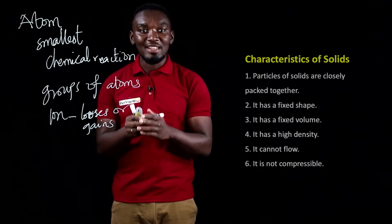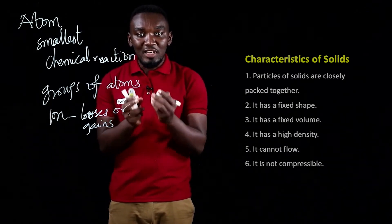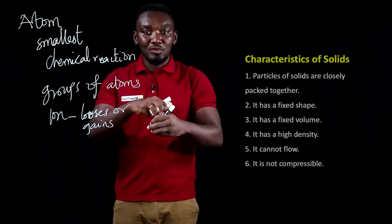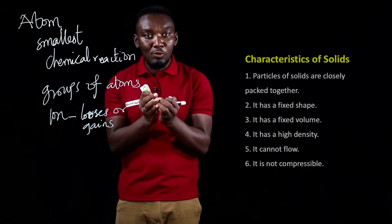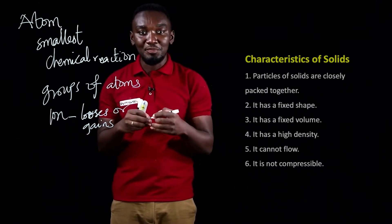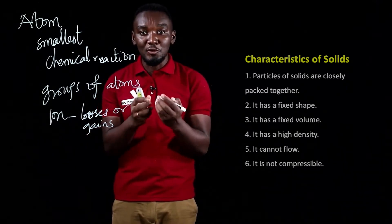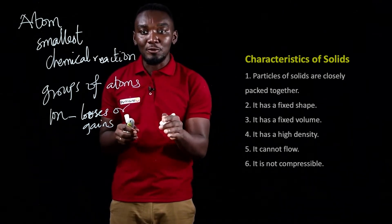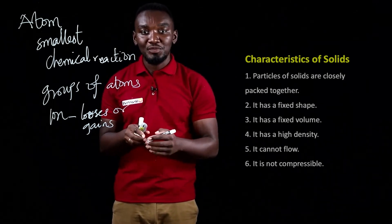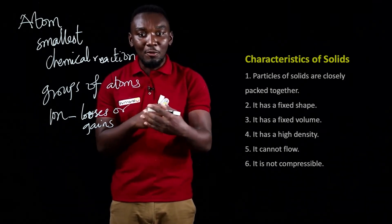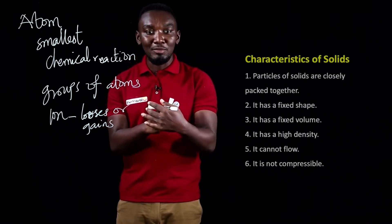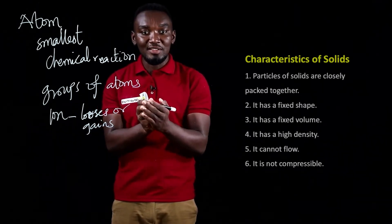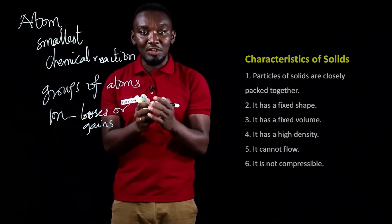When we look at solids, what are their characteristics? Solid particles are closely packed together — they are arranged closely packed. Solids have a fixed shape and a fixed volume. They have high density, and they cannot flow like liquids. It is also not easily compressible — you cannot easily compress a solid block to get something very little because their particles are very closely packed.